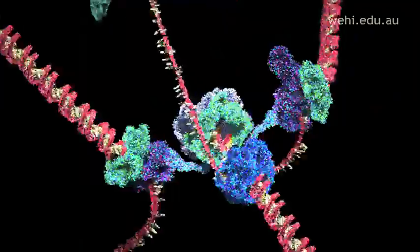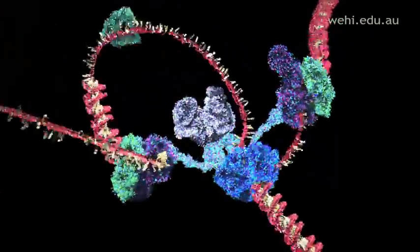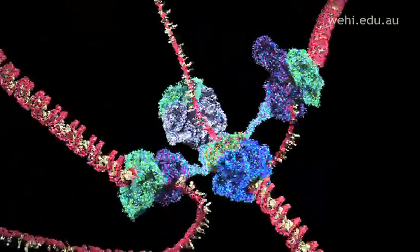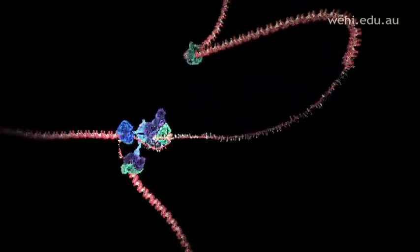Things are not so simple for the other strand because it must be copied backwards. It is drawn out repeatedly in loops and copied one section at a time.